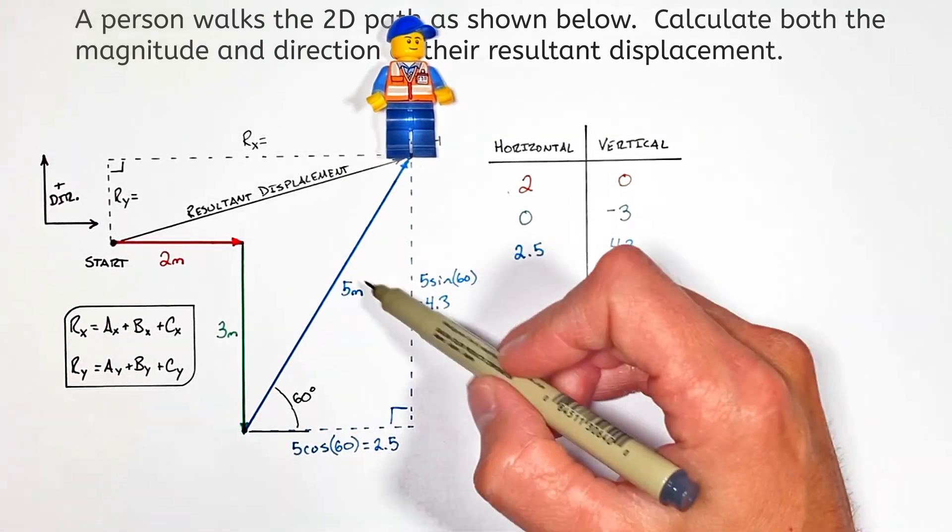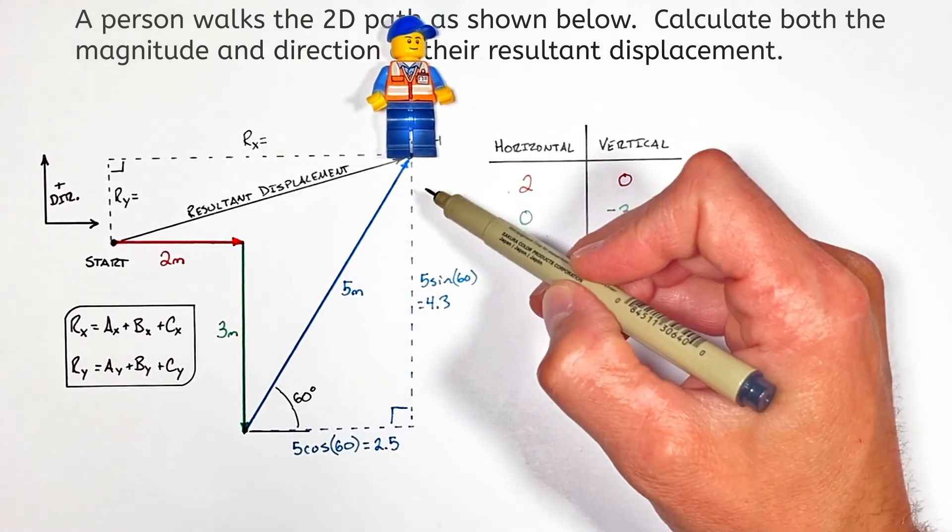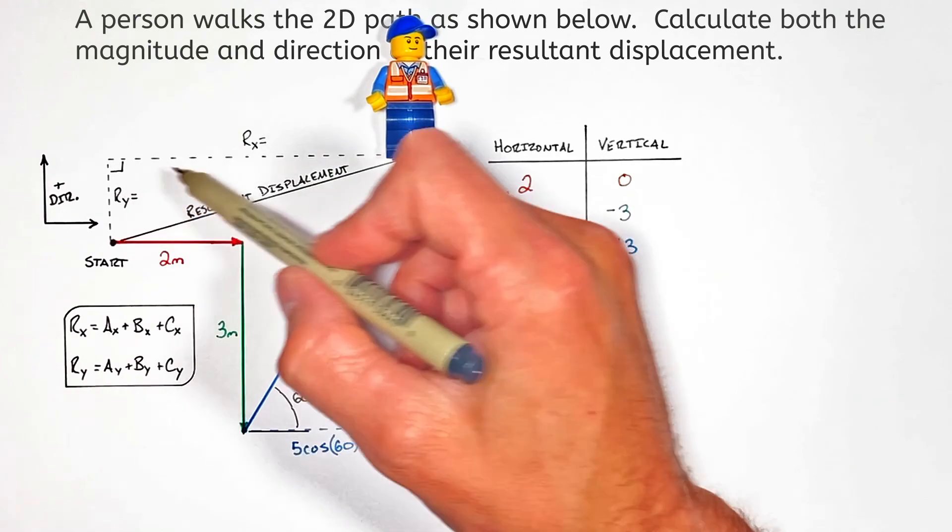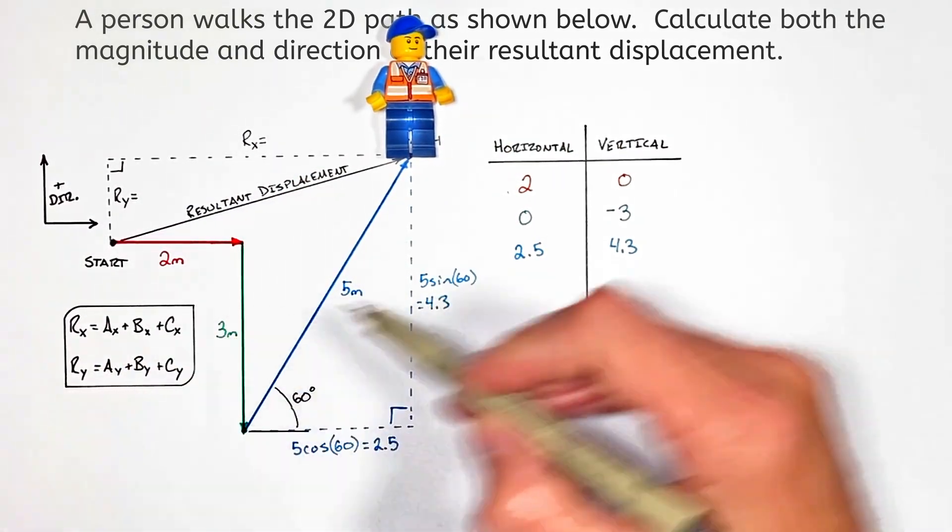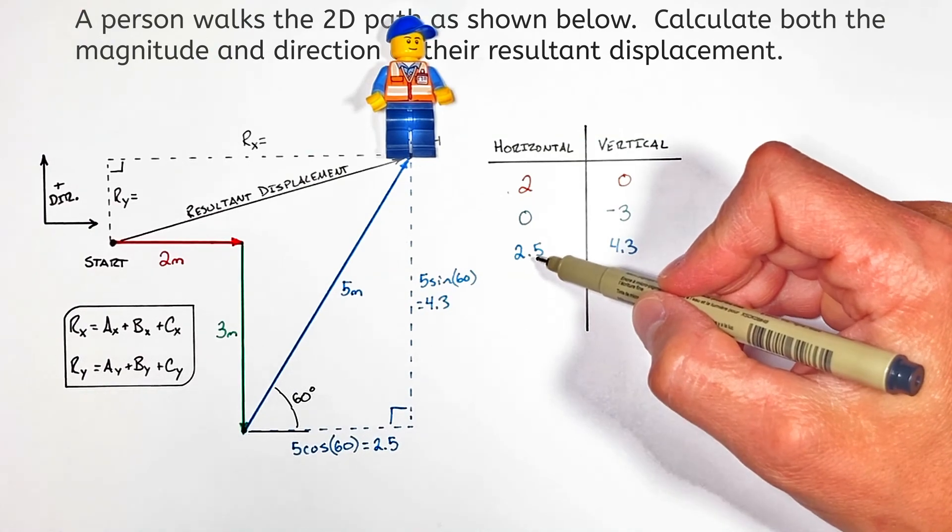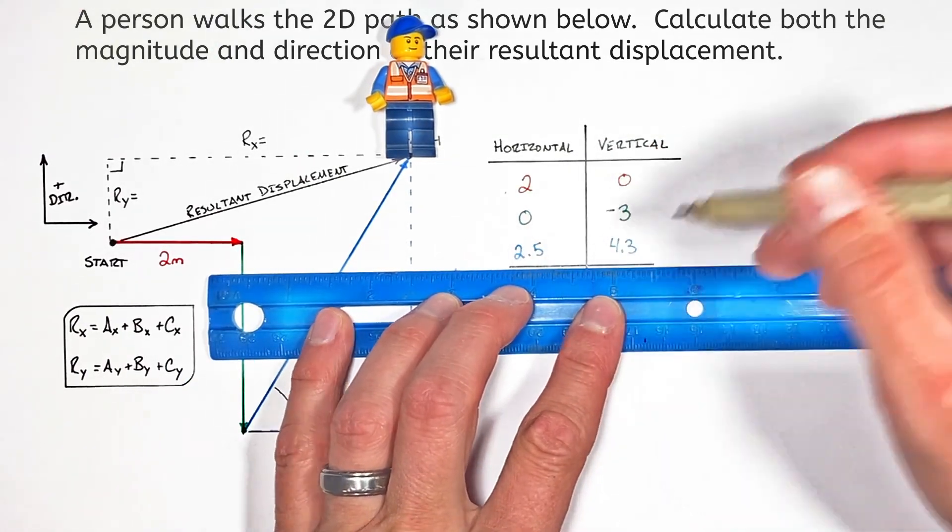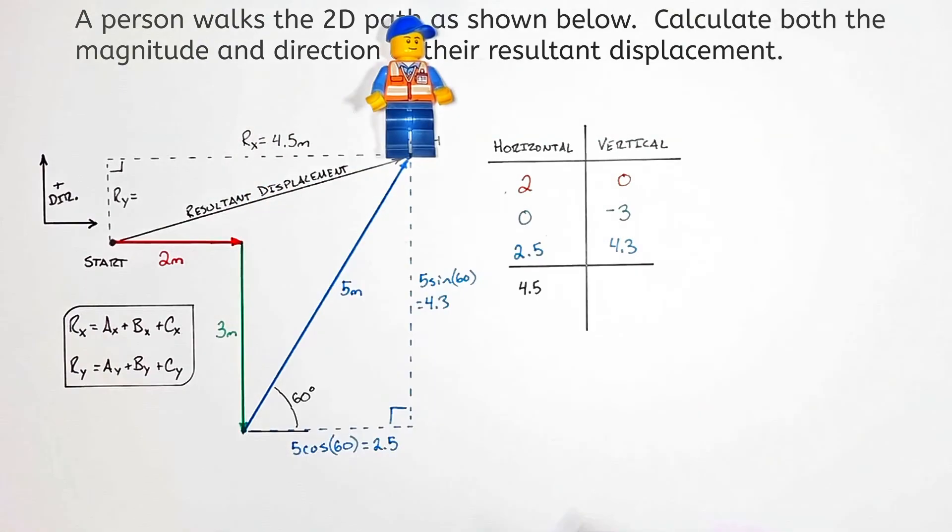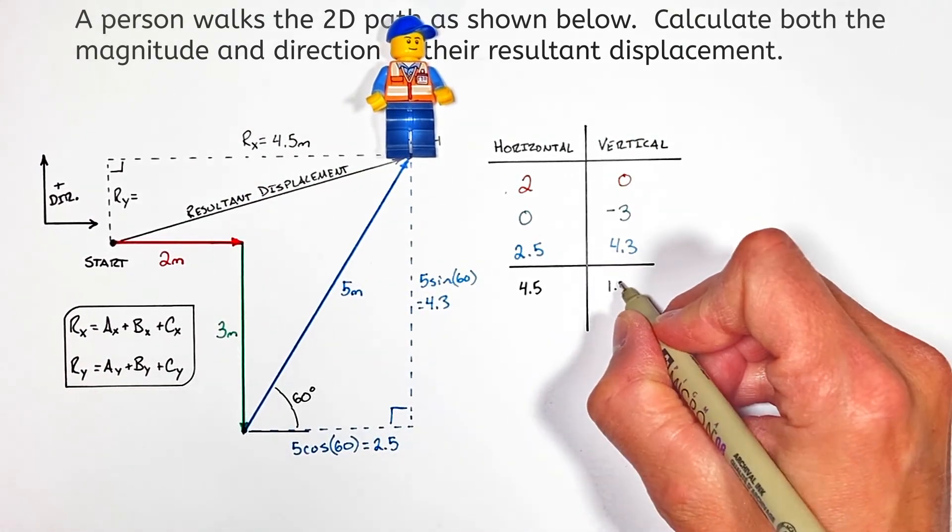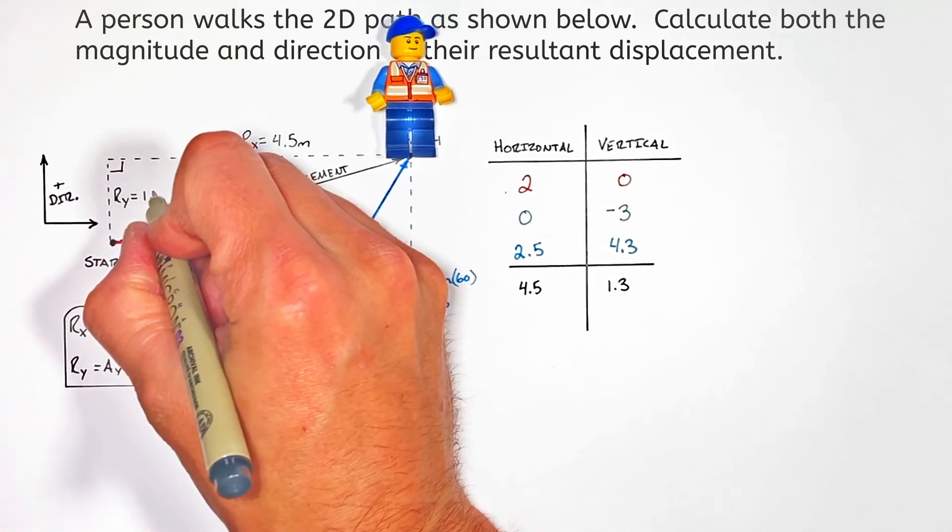The second equation is telling us the vertical component of our resultant vector. Much like this diagonal vector had a horizontal and vertical component, our resultant has a horizontal and vertical component. If we add up all of the horizontal components, we'll have the horizontal component of the resultant vector, and if we add up all the vertical components, we'll have the vertical component of the resultant vector.